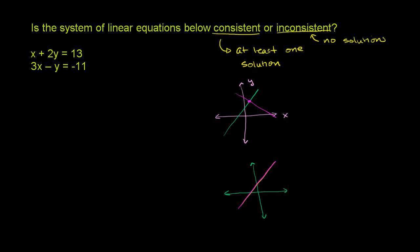An inconsistent system would have no solutions. So let me again draw my axes. The only way that you're going to have two lines in two dimensions have no solutions is if they don't intersect or if they are parallel. So one line could look like this, and then the other line would have the same slope, but it would be shifted over with a different y-intercept. So it would look like this. That's what an inconsistent system would look like. You have parallel lines. This right here is inconsistent.